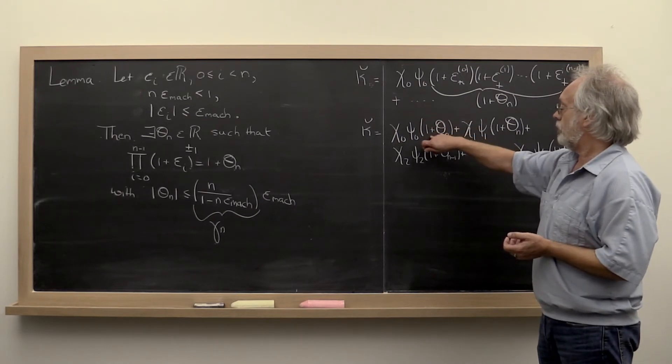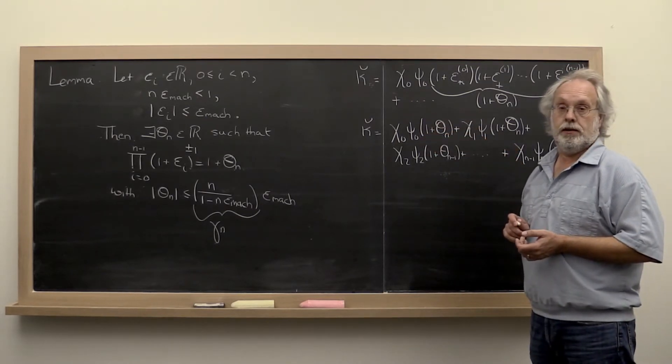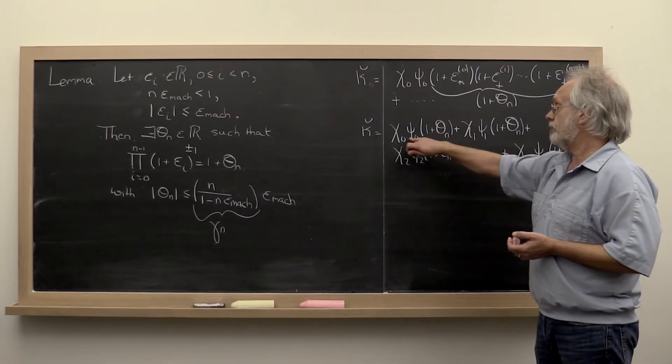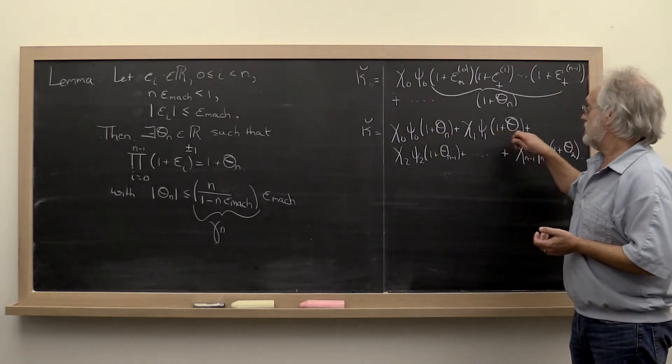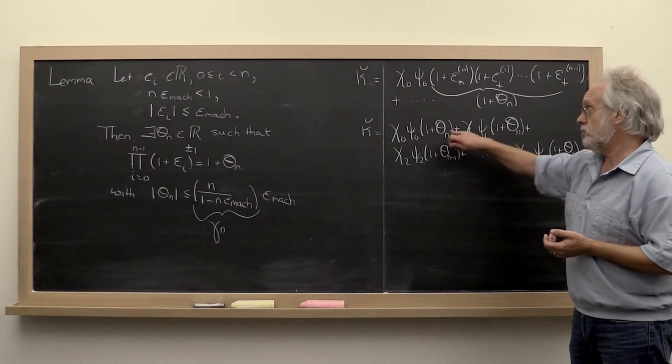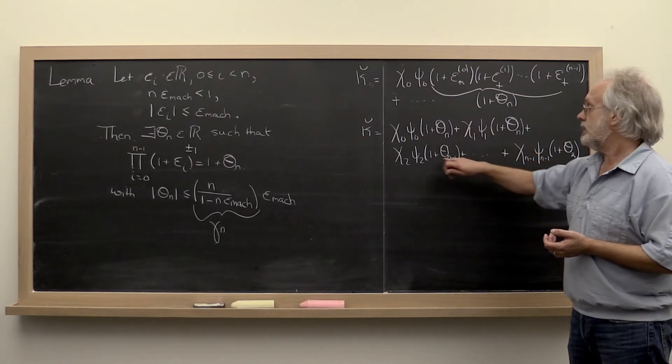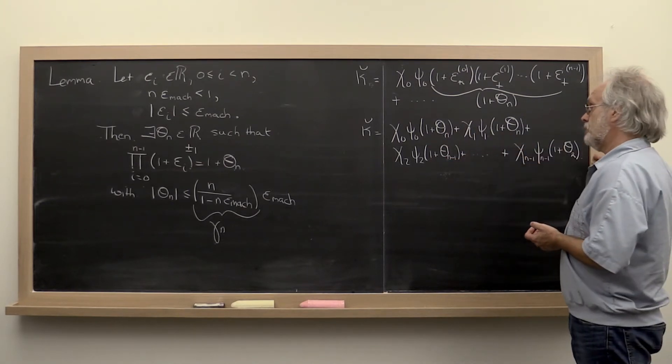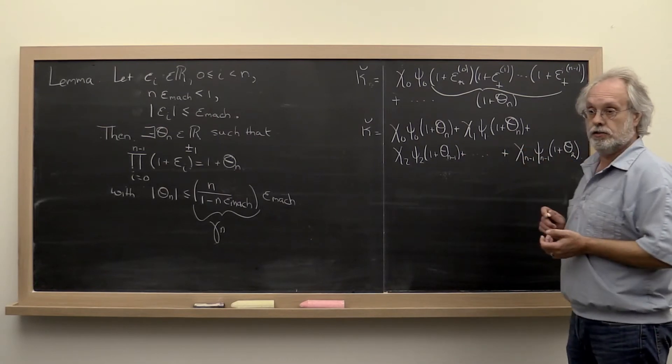except that now we throw these factors in of 1 plus theta_n for the first term, 1 plus theta_n for the second term. And then 1 plus theta_n minus 1, then you start decreasing every time you add another term.